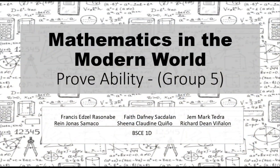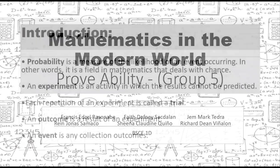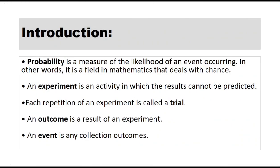Mathematics in the Modern World: Probability by Group 5. Probability is a measure of the likelihood of an event occurring. In other words, it is a field in mathematics that deals with chance.